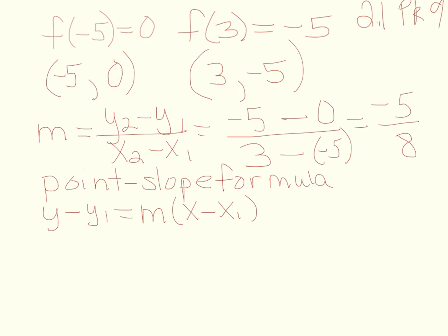So let's plug in. Let's say we take the first point. We're going to use the minus 5, 0. And we're going to use the slope of course of minus 5 over 8. So those are our two givens. So what we're going to do is we're going to plug in 0 for y1.